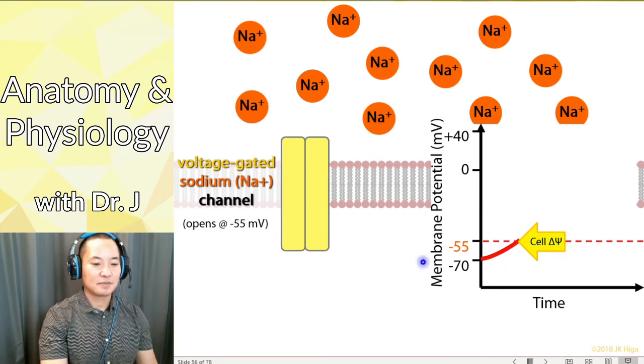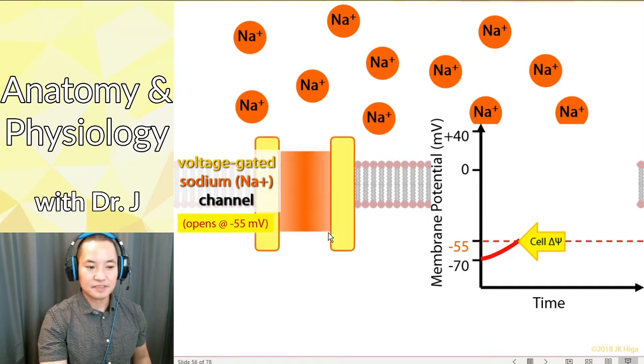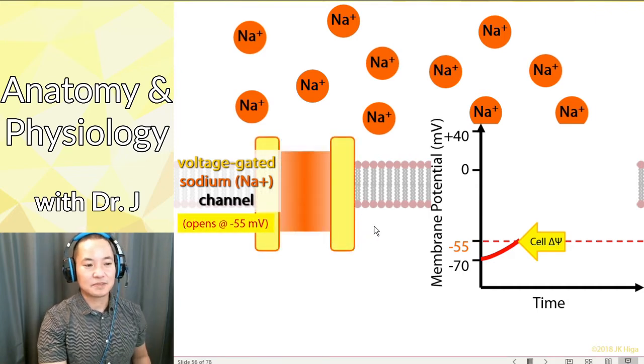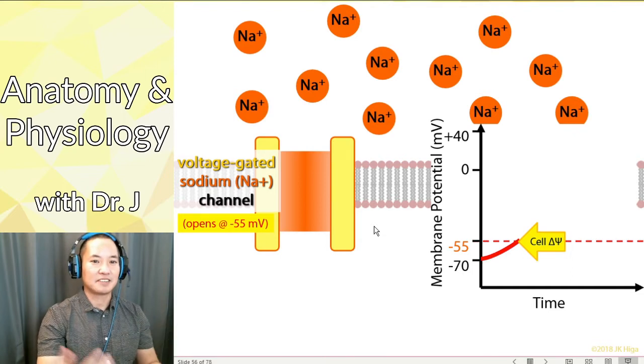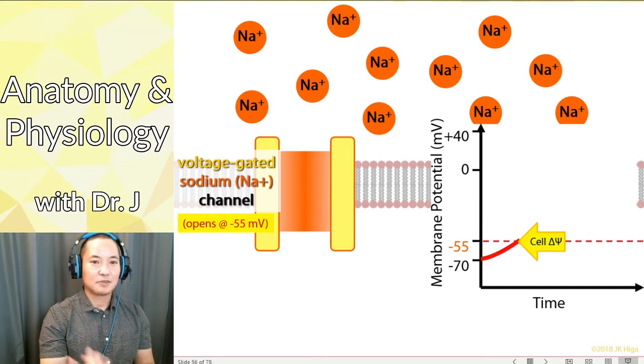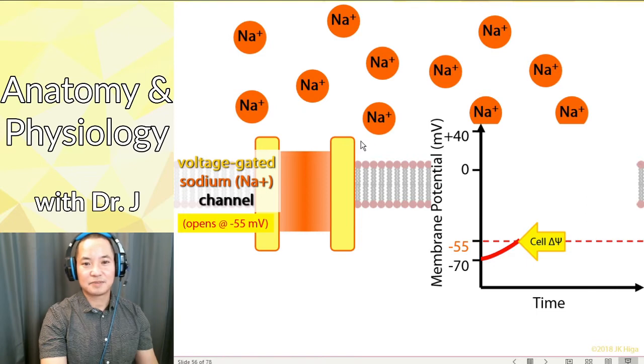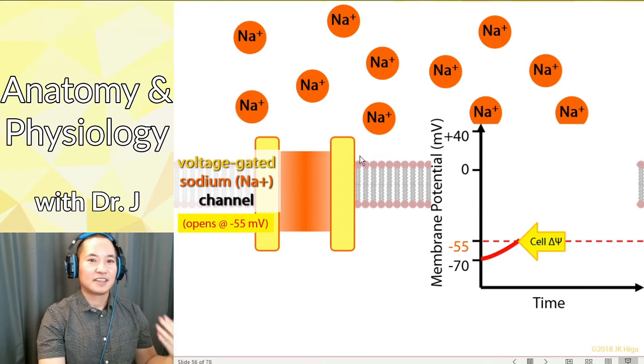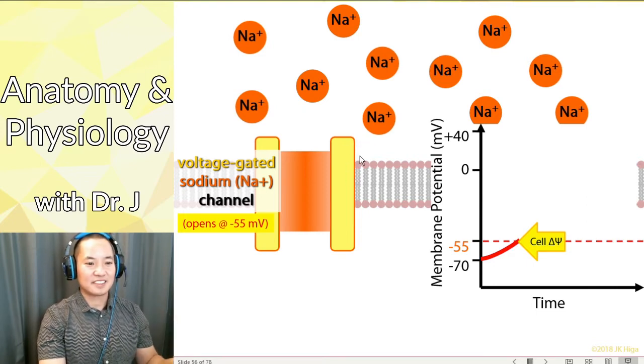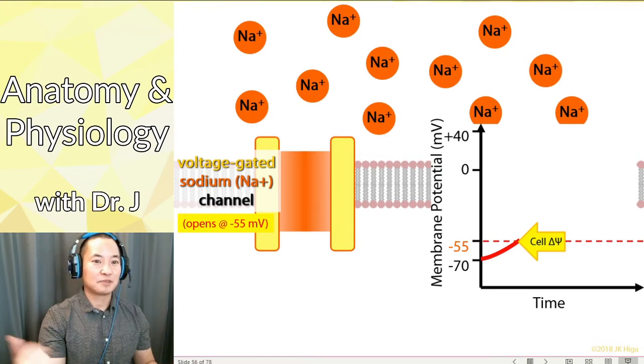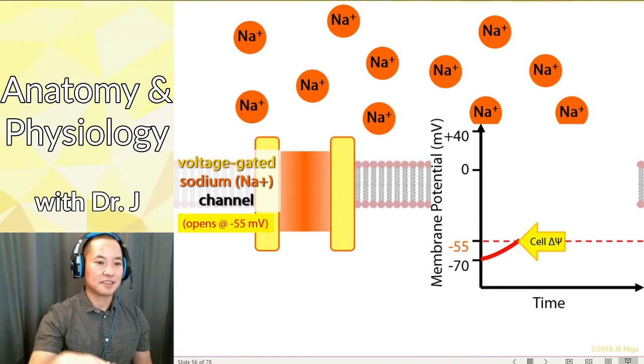So when you make the inside of a neuron more and more positive and it reaches that threshold, these gates open. And when they open, what happens? Well, remember there's more sodium on the outside and relatively less on the inside of the cell. So by simple diffusion, and now we have facilitated diffusion because we have this channel that allows them to move either way.